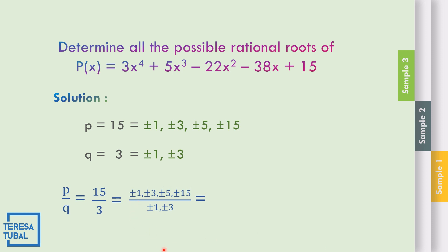Dividing p by q: 1 divided by 1 is positive-negative 1; 3 divided by 1 is positive-negative 3; 5 divided by 1 is positive-negative 5; 15 divided by 1 is positive-negative 15. Dividing by 3: 1 divided by 3 is positive-negative 1 third; 3 divided by 3 is 1 (already listed); 5 divided by 3 is positive-negative 5 over 3; 15 divided by 3 is positive-negative 5 (already listed).